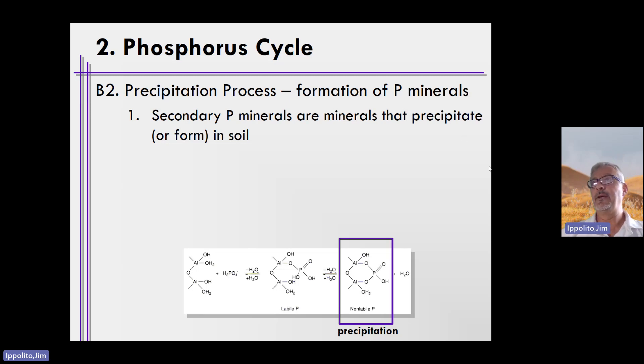Mineral precipitation is simply the formation of phosphorus containing minerals. In the case at the bottom, this is an aluminum phosphate. The same reactions that you see here on this slide would occur with iron oxides or hydroxides. All you would do is replace aluminum with iron in this picture.